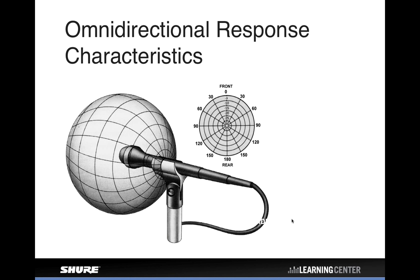In recording and broadcast applications, omnidirectional is totally fine. In live sound reinforcement, it's probably more likely to be unidirectional microphones — except for cases like musical theater with headworn mics very close to the mouth. If you've attended our webinar on maximizing gain-before-feedback, you know keeping the microphone close to the sound source is the best way to maximize that, and a headworn mic close to your mouth lets you get away with an omni pattern effectively.